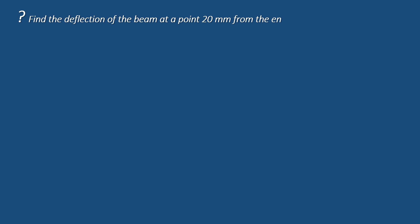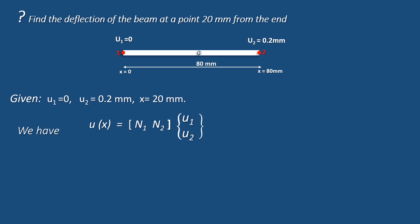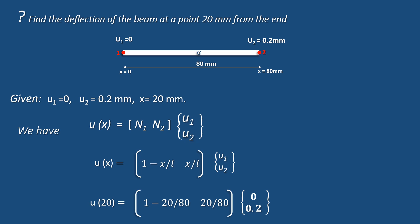Let's take an example. A two-noded element of 80 mm length is given. The displacement at node 1 is 0 mm and at node 2 is 0.2 mm. We need to find the deflection at a point 20 mm from the left end, so x = 20. Using u(x) = [N1  N2] · {u1  u2} = [1 − x/L,  x/L] · {u1  u2}, substituting x = 20, L = 80, u1 = 0, and u2 = 0.2, we get a final displacement value of 0.05 mm.